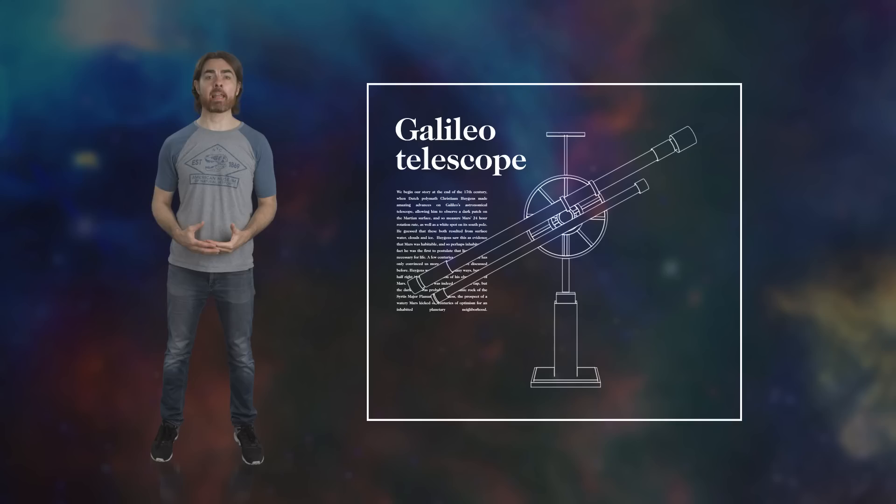We begin our story at the end of the 17th century, when Dutch polymath Christian Huygens made amazing advances on Galileo's astronomical telescope. This allowed him to observe a dark patch on the Martian surface and measure Mars' 24-hour rotation rate, as well as a white spot on its south pole.